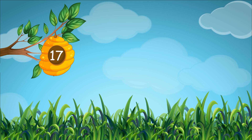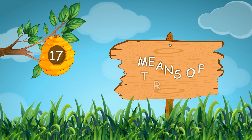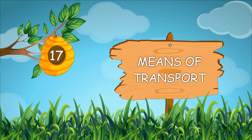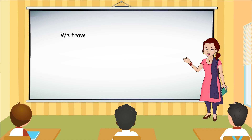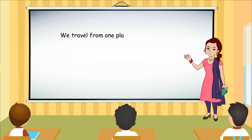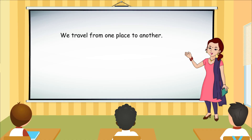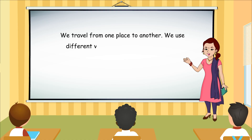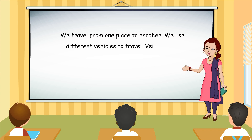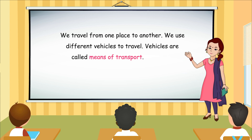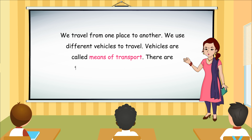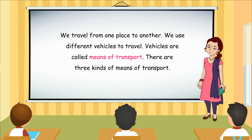Chapter 17: Means of Transport. We travel from one place to another. We use different vehicles to travel. Vehicles are called means of transport. There are three kinds of means of transport.